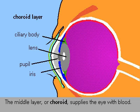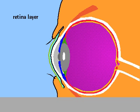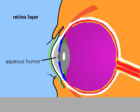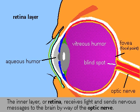The middle layer or choroid layer supplies the eye with blood. The inner layer or retina receives the light image, converting it into impulses that are sent through the optic nerve to the brain.